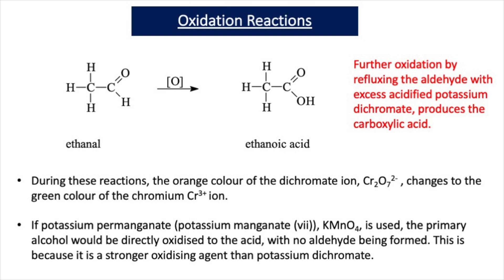Acidified potassium dichromate is orange in colour because of the dichromate ion, Cr2O7²⁻. Whenever dichromate oxidises a substance, it changes to green because it is converted to the Cr³⁺ ion. If dichromate changes to Cr³⁺, the oxidation state on chromium is changing from +6 to +3, so it is being reduced — it gains electrons. These electrons come from the substance being oxidised, because oxidation is a loss of electrons.